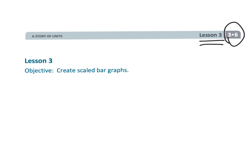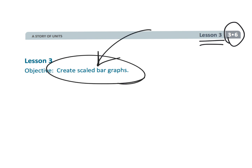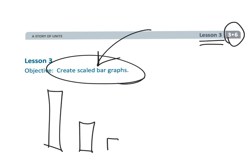That wraps up third grade module six lesson three — having students take data and create scaled bar graphs. Sometimes they're vertical, and sometimes they are horizontal.